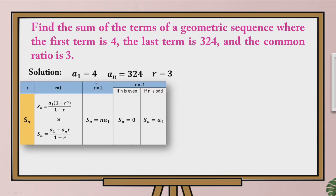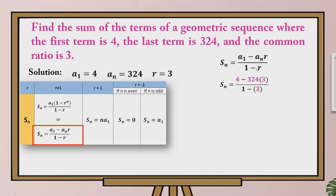Referring to our table, we look at r not equal to 1. Since we know A sub 1, we also know the last term and the common ratio, so we will use the second formula. Using this formula, we substitute the values: A sub 1 is 4, A sub n is 324, and r is 3, all over 1 minus 3. Multiplying first: 324 times 3 gives 972. And 1 minus 3 gives negative 2. So we then subtract 4 minus 972, getting negative 968 divided by negative 2.